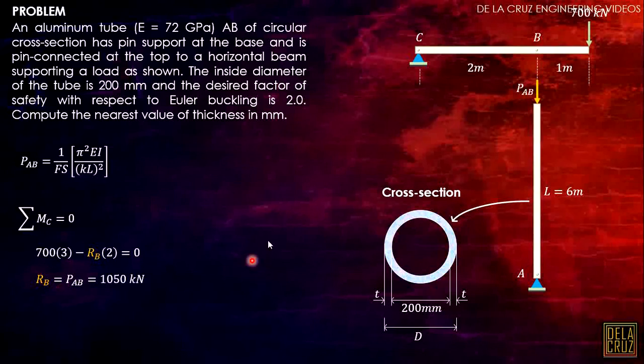Now by using this formula, check the values here. So we have this P_AB, we have the factor of safety, we have this modulus of elasticity E, we have the k, we have the L which is the length of this column, and what we don't have here is the inertia.